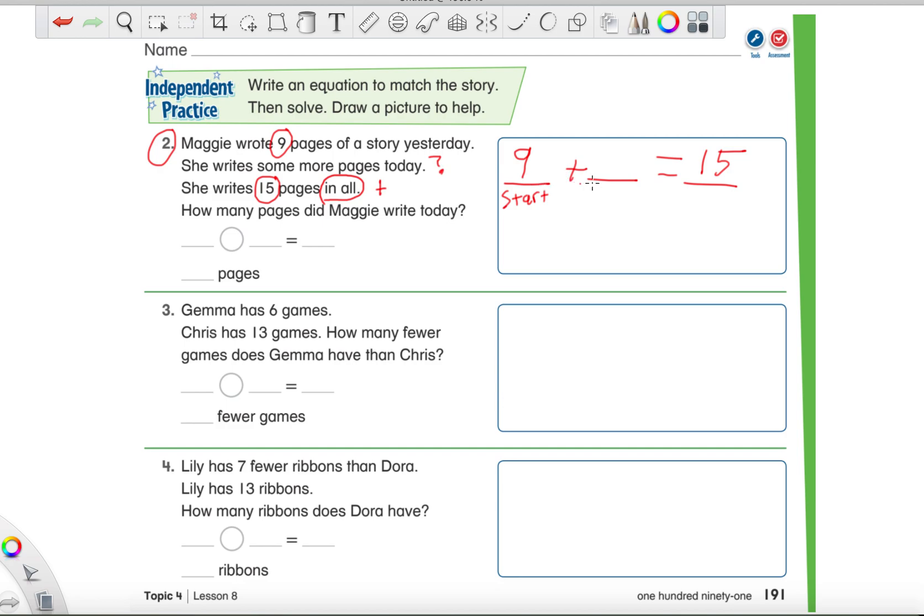Is it going to go in the space next to the plus sign? Or is that the total number of pages that she wrote? When they give you a number and it says in all, that is our total. So 15 has to go in our answer spot. So now we have 9 plus blank equals 15 which is our end spot. If we're going to use the number line, that's what's going to be at the end there. Down here I can make a little number line. Starting with 15. Then going backwards to 14, 13, 12, 11, and 10, and 9.